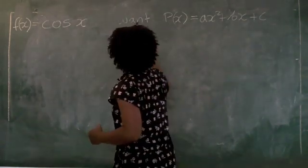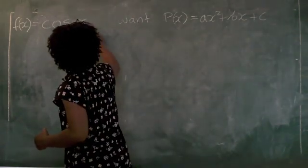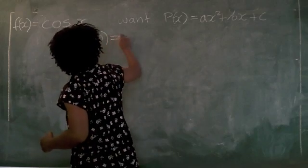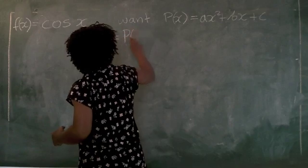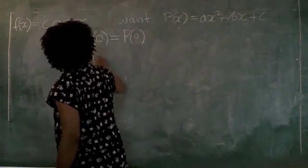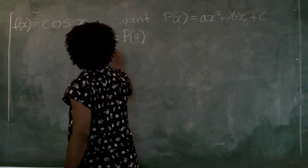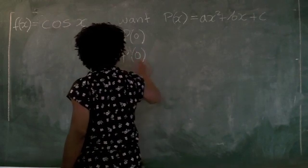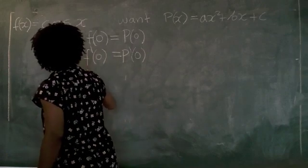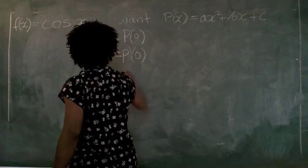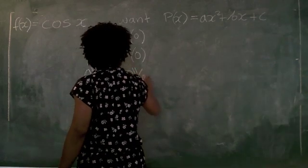So we want p of x to be equal to this expression. And we want f of 0, or the cosine of 0, to be equal to p at 0, and f prime at 0 to be equal to p prime at 0, and we want f double prime at 0 to be equal to p double prime at 0.